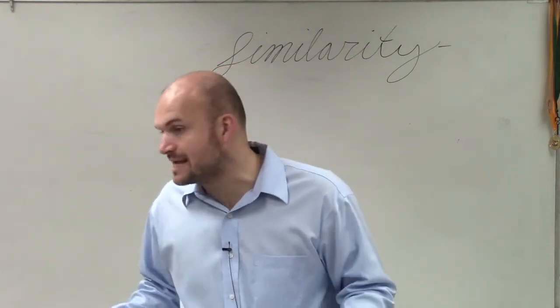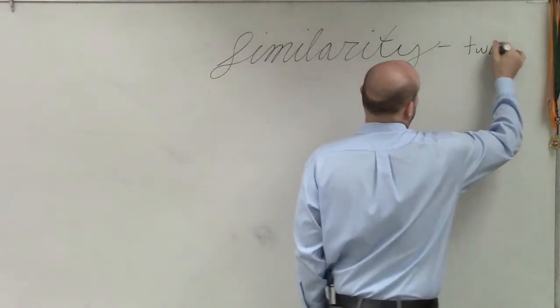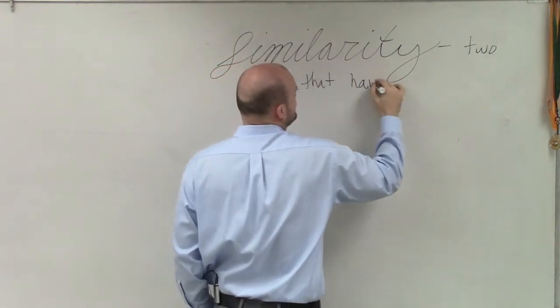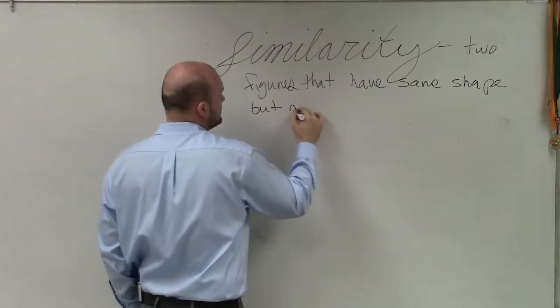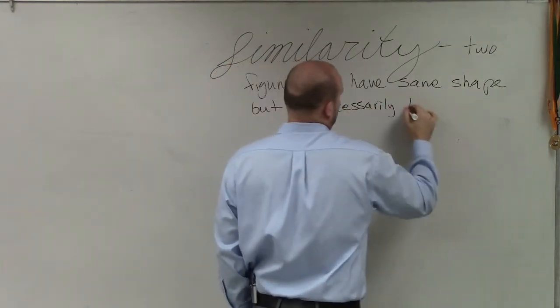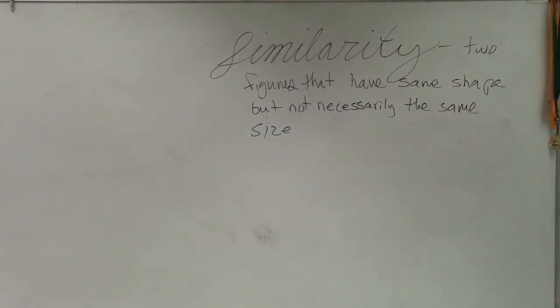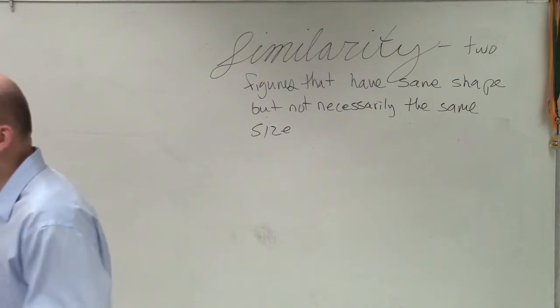We said two things were congruent if they were exactly the same size and shape. Similarity is going to be two figures that have the same shape but not necessarily the same size. That means they have the same shape but don't necessarily have the same size. That just means they're similar.